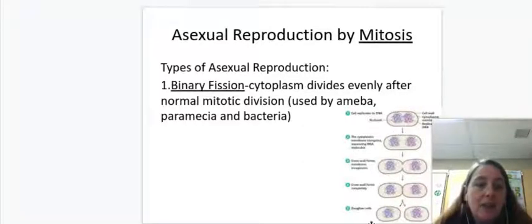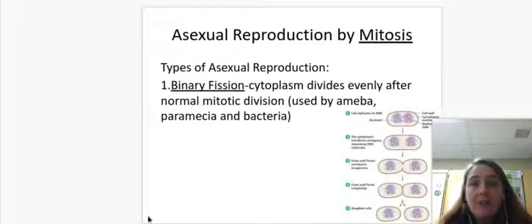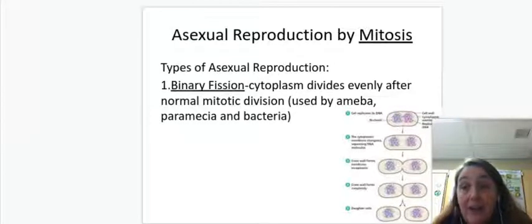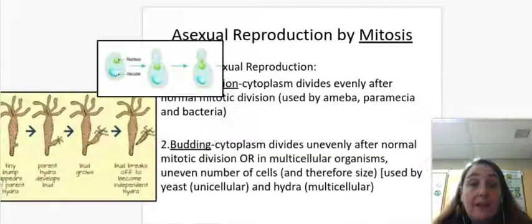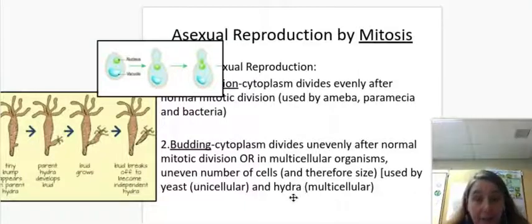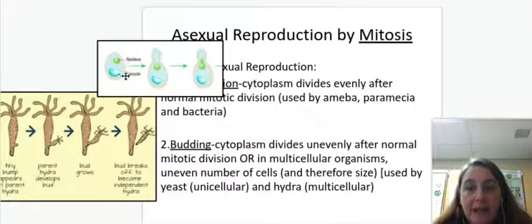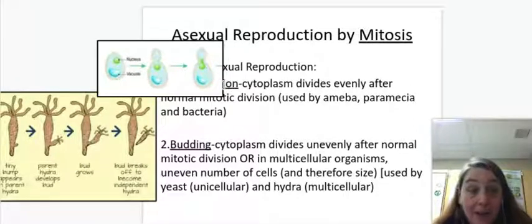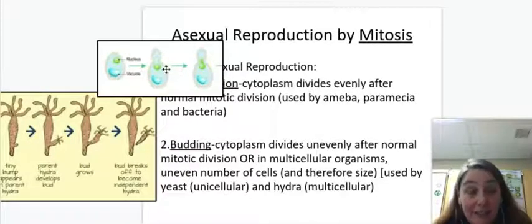You start with one cell, you get two cells that are genetically identical, and they're also about the same size. Okay. Amoebas do this, paramecia, bacteria. And the other one where we had an uneven division was budding. The cytoplasm divides unevenly. And you can see here, we have a yeast cell. And it divides the nucleus by mitosis. And both cells are going to get an equal amount of DNA. They're going to get exact copies of the DNA. But one of the offspring cells can be small, the bud, and one's going to be large. That's budding.